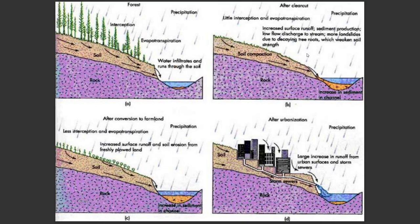After conversion to farmland, there is again less interception and less evapotranspiration, resulting in increased surface runoff and soil erosion from freshly ploughed land. After urbanization, water is directed straight to drainage. There is a large increase in runoff from urban surfaces and storm sewers.